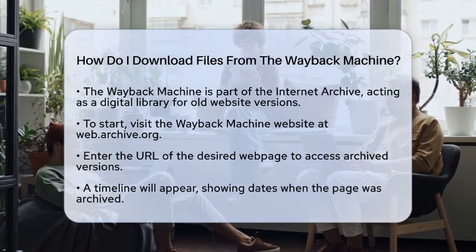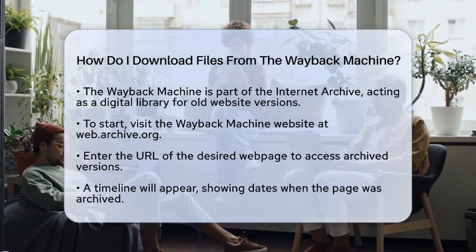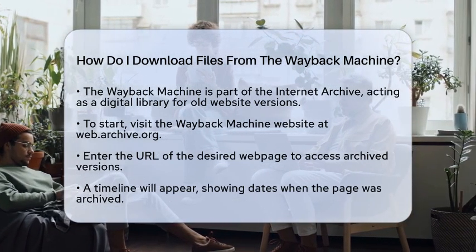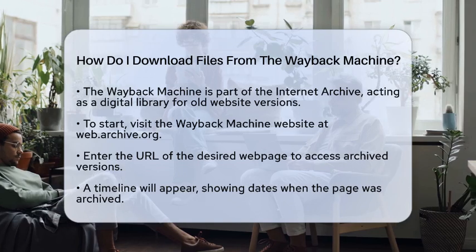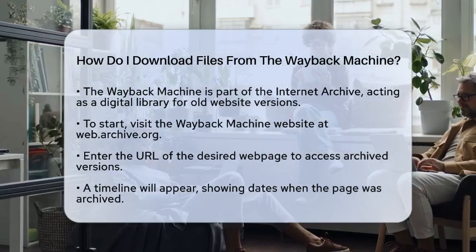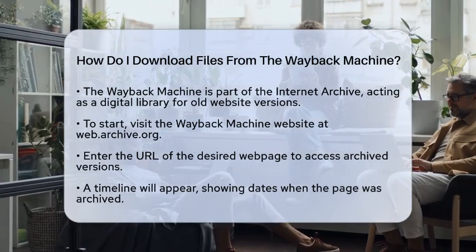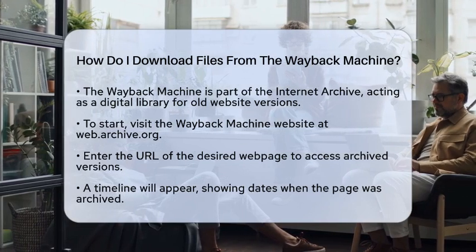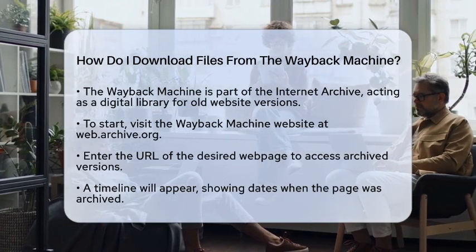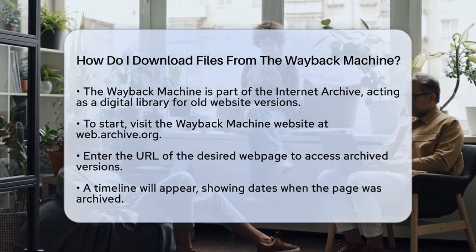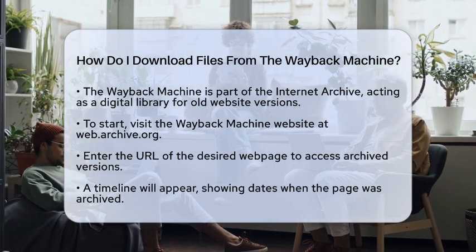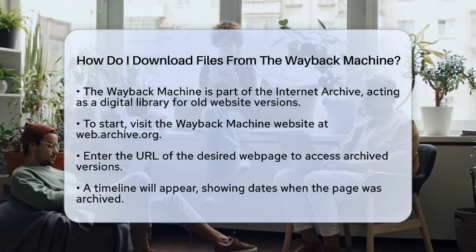First, you will want to visit the Wayback Machine website at web.archive.org. Once you are there, enter the URL of the web page you want to access. The site will show you a timeline with dates when the page was archived. This is your first step in retrieving the content.